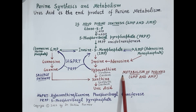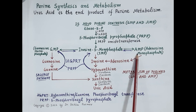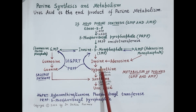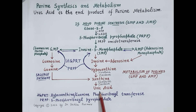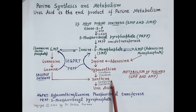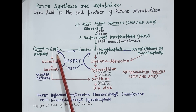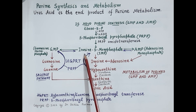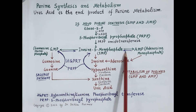Now let us understand how these nucleotides are broken down. Breakdown of purine nucleotides is shown in red. Inosine 5-monophosphate is broken down to inosine, then to hypoxanthine, then xanthine, and finally uric acid is produced. Similarly, AMP is broken down to adenosine, then hypoxanthine, then xanthine, and again uric acid. GMP is broken down to xanthine and finally uric acid. So all three — IMP, AMP, and GMP — ultimately produce uric acid.